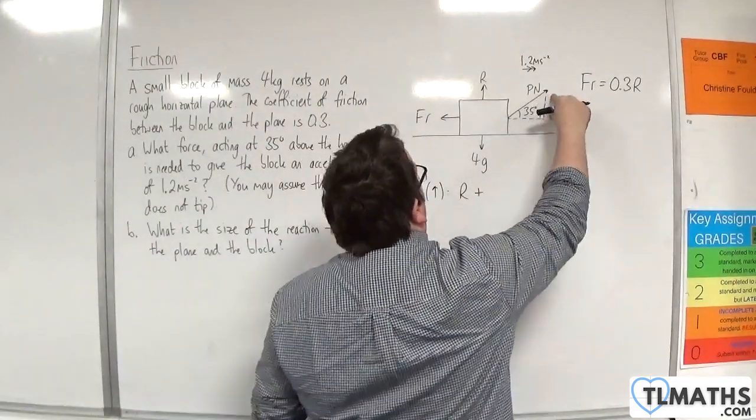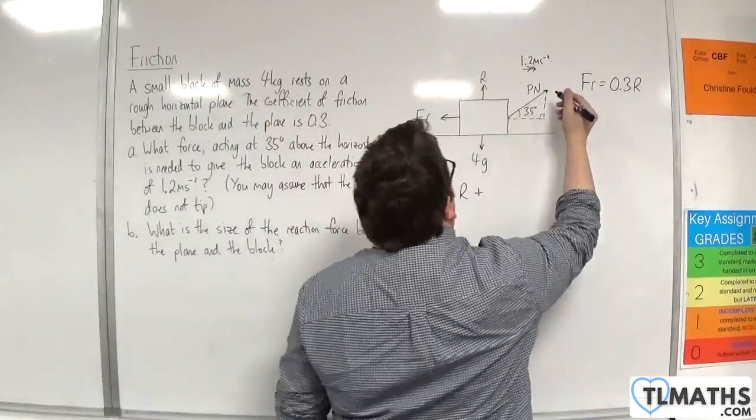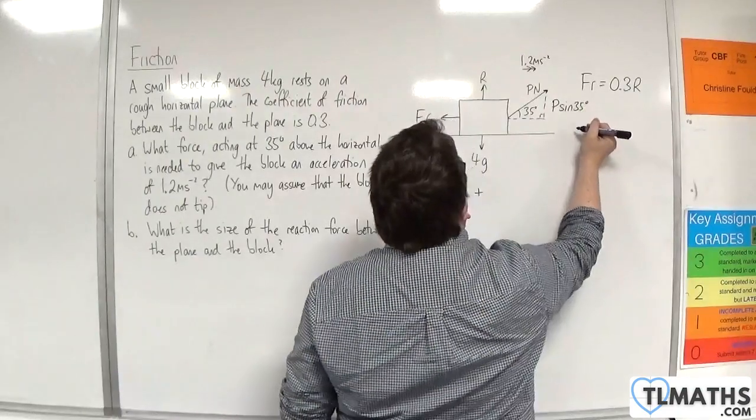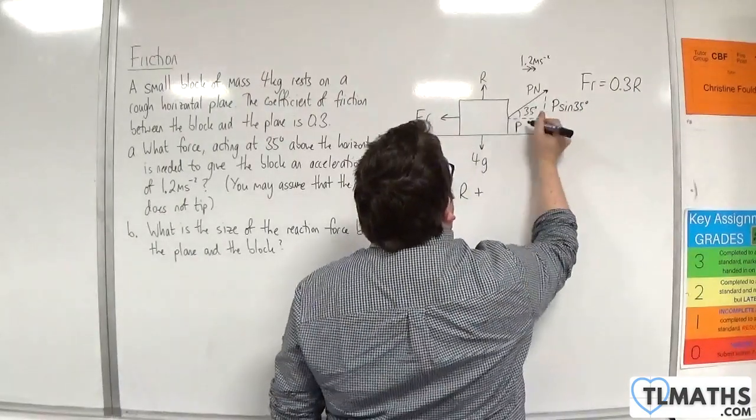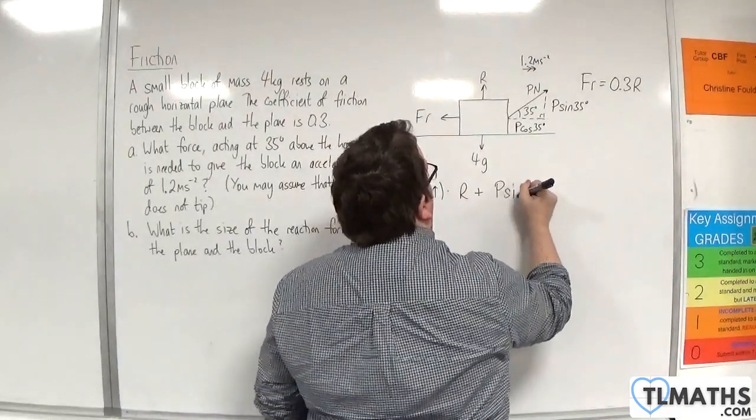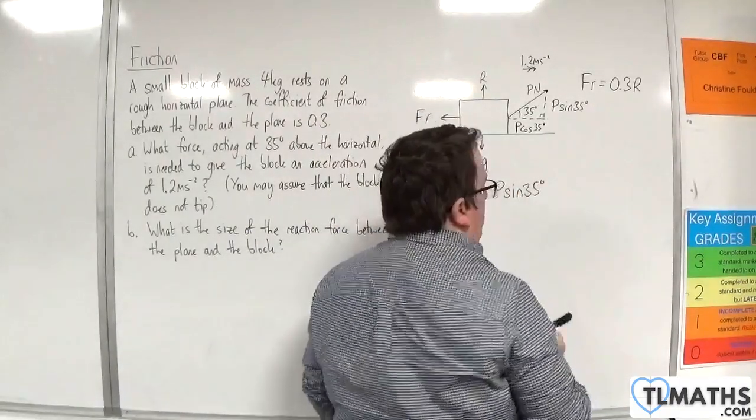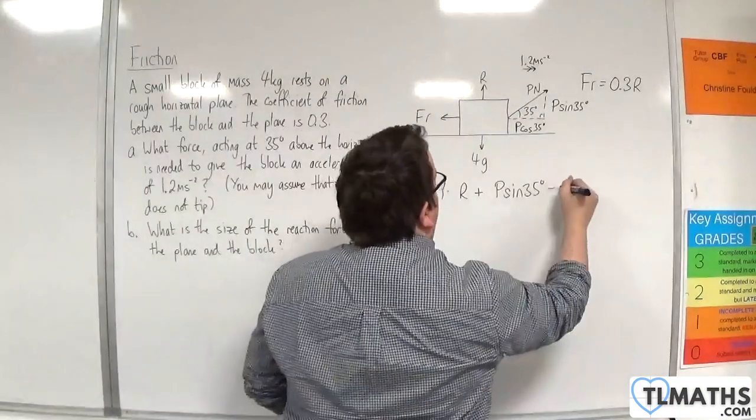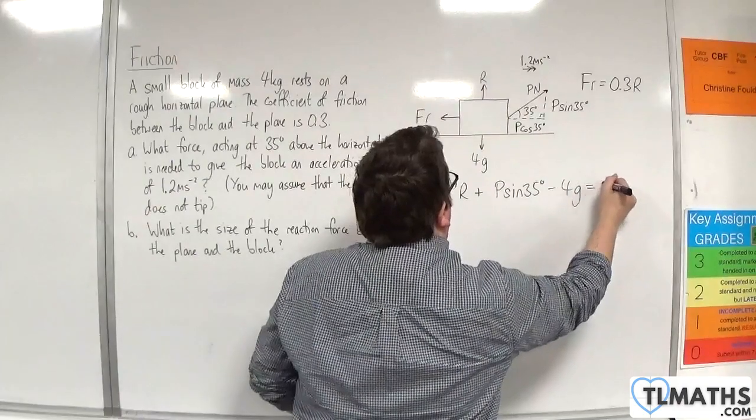Now we've got the component of the P-force here, so that would be P sin 35 degrees, and this horizontal part is P cos 35 degrees. So P sin 35 degrees, and then take away the weight 4G is going to be equal to 0.